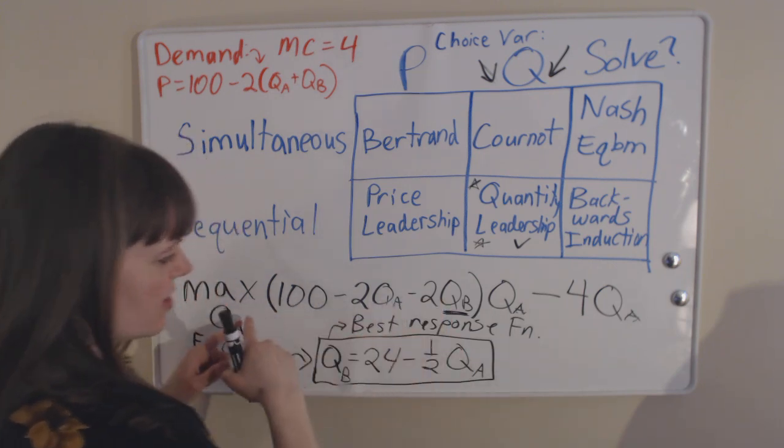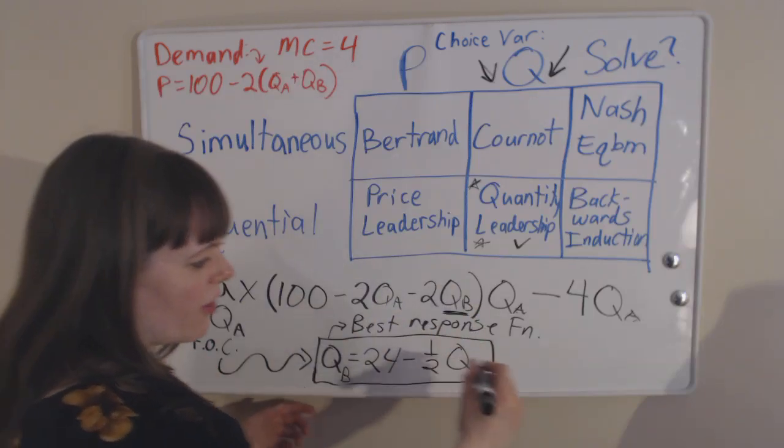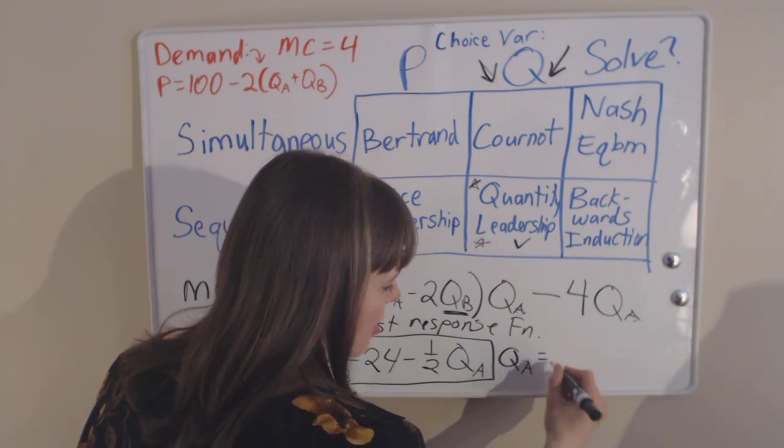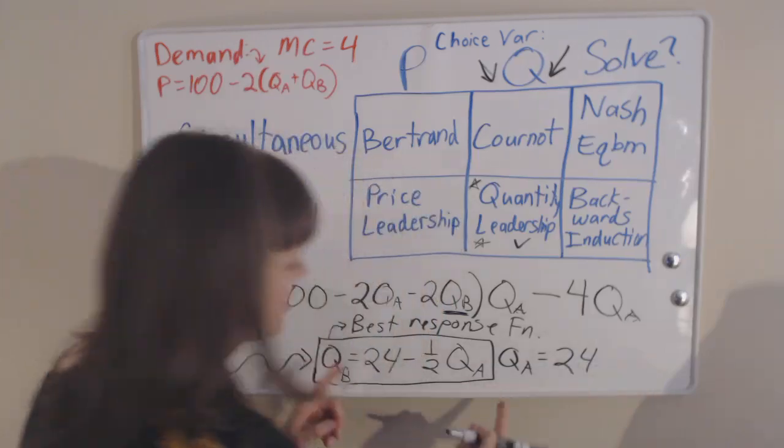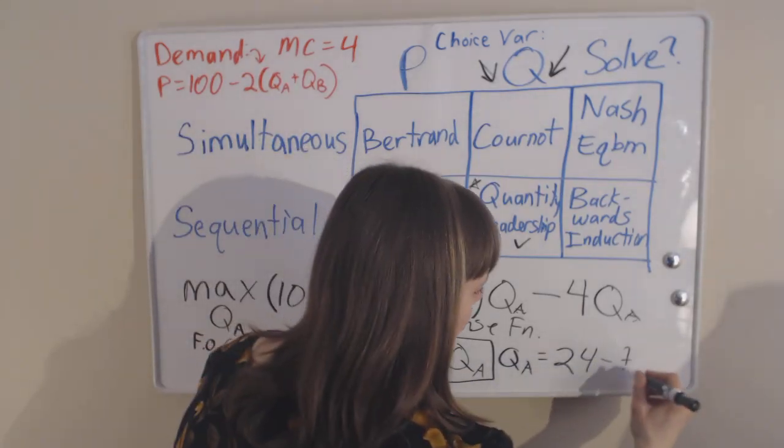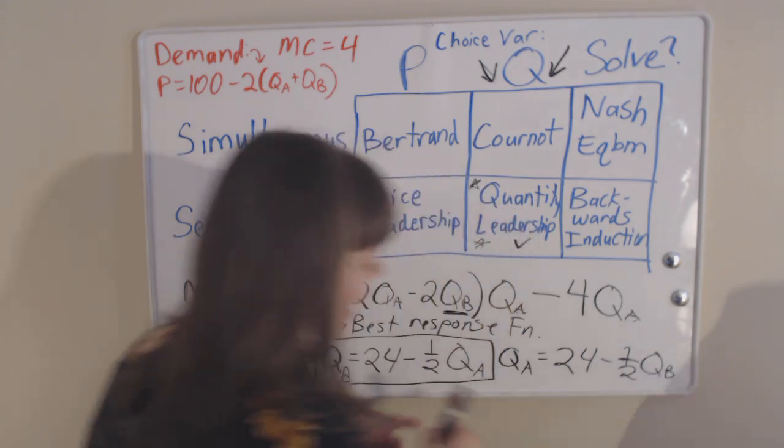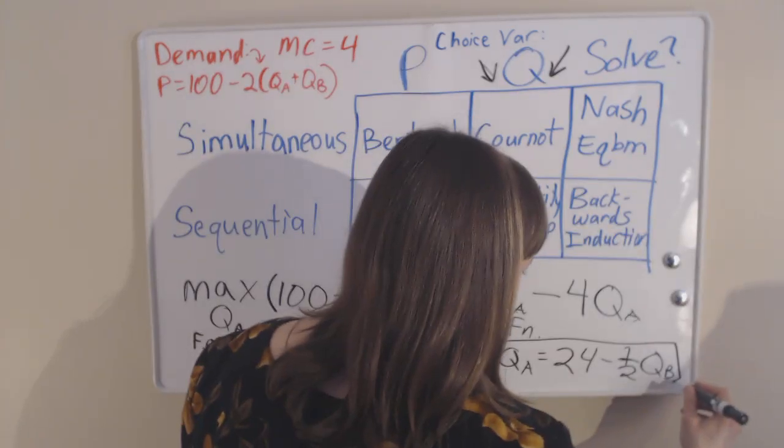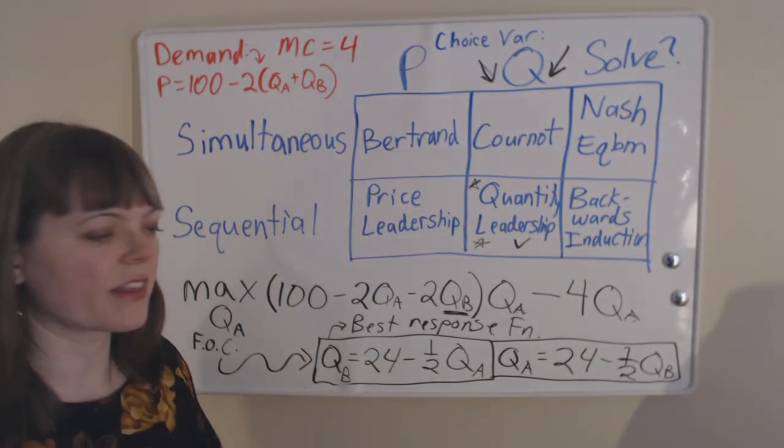We take this function that's actually written up here now and solve on through, and we will find that firm A's optimal response, their best response to firm B, is actually identical: 24 minus 1 half QB. So we have firm B's best response to A and firm A's best response to B, which we got by taking the first order conditions and solving these.